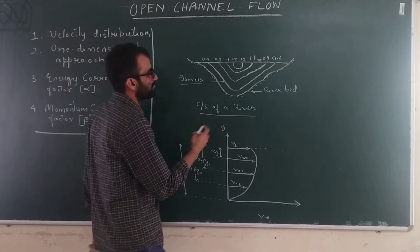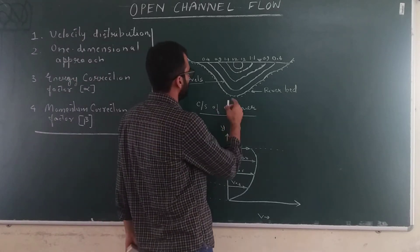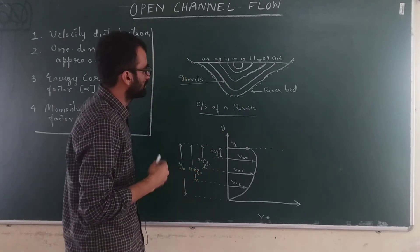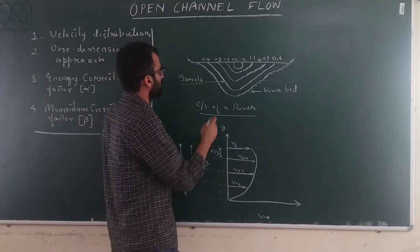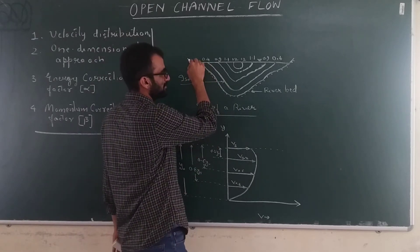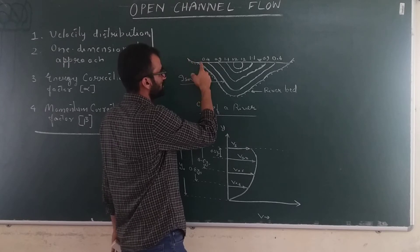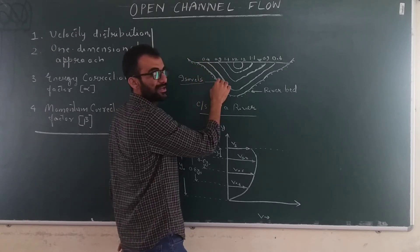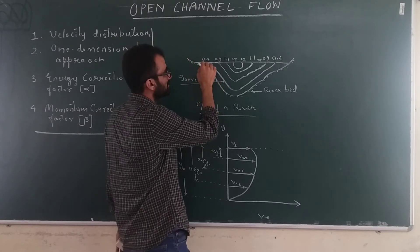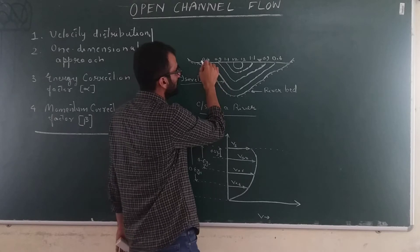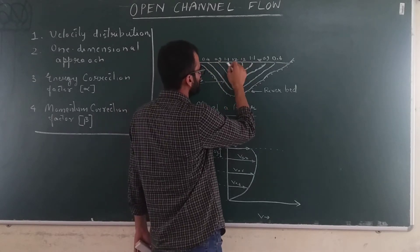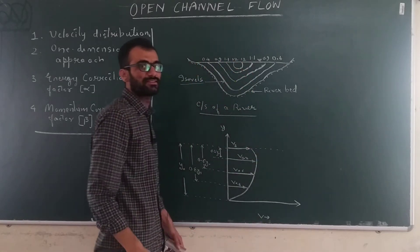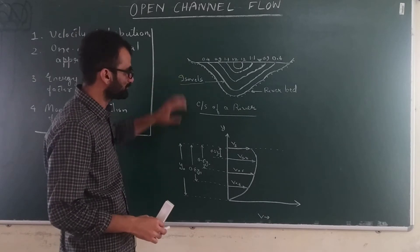If you observe the isovels, you will learn that near the bank the velocities are less because of high resistance from the bank. As you go toward the center of the river, the velocity values go on increasing.